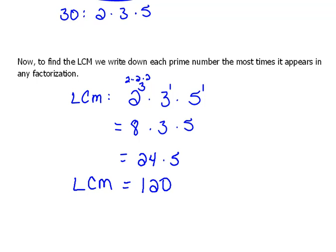So our least common multiple between those three numbers, 20, 24, and 30, is 120.